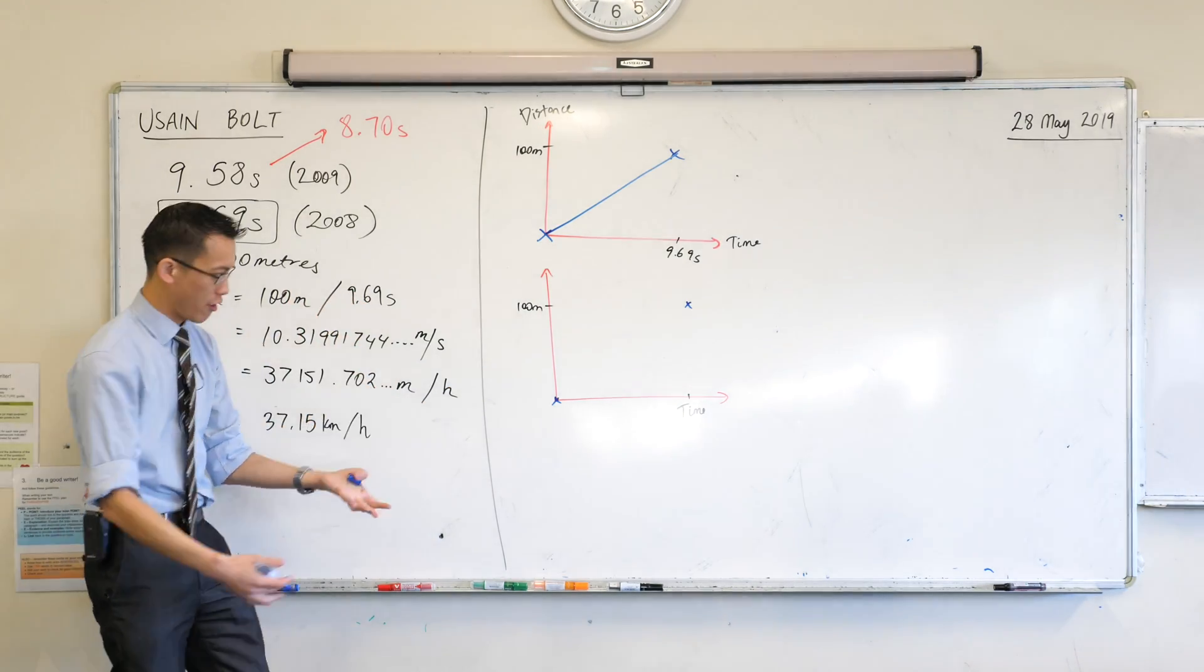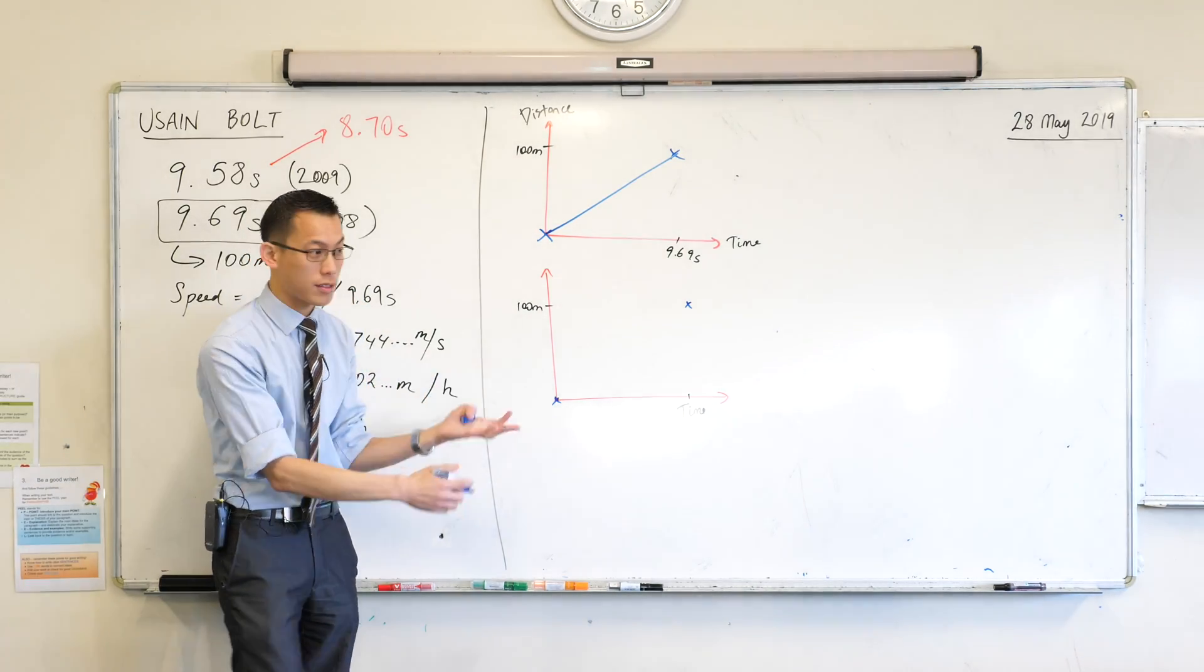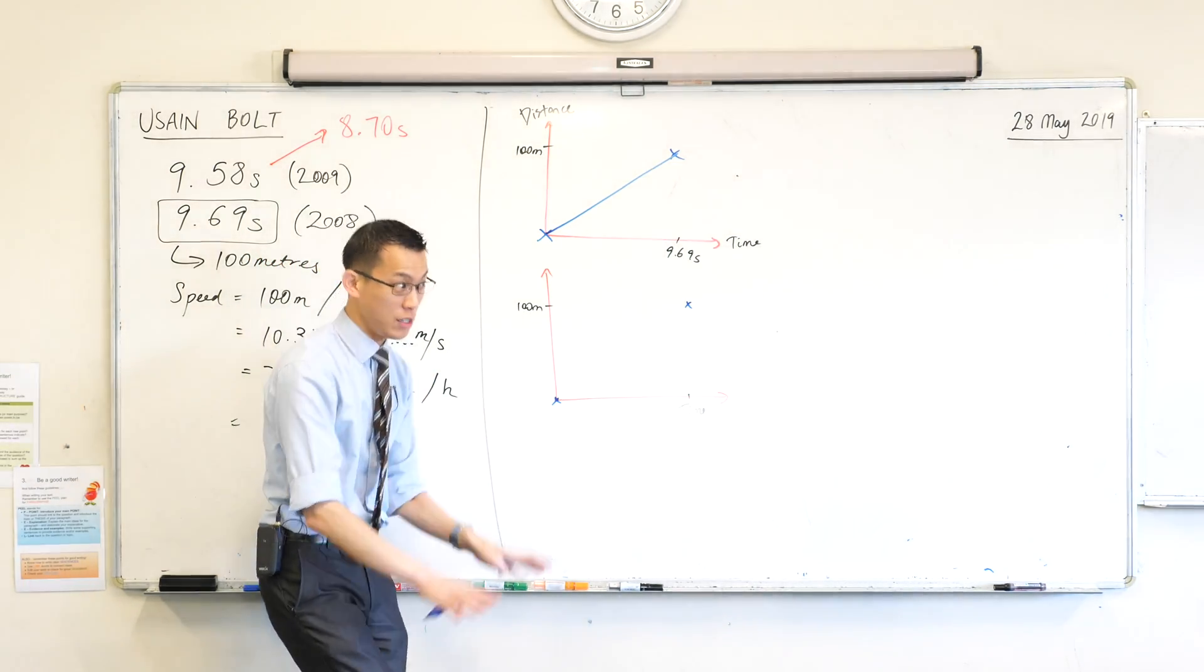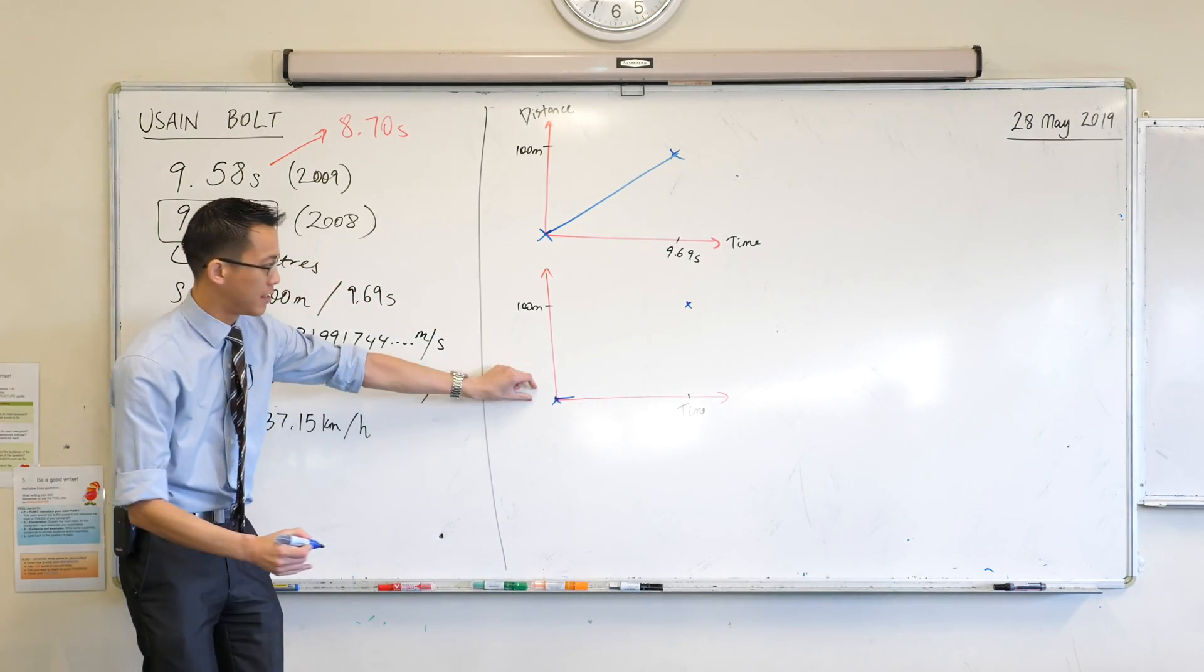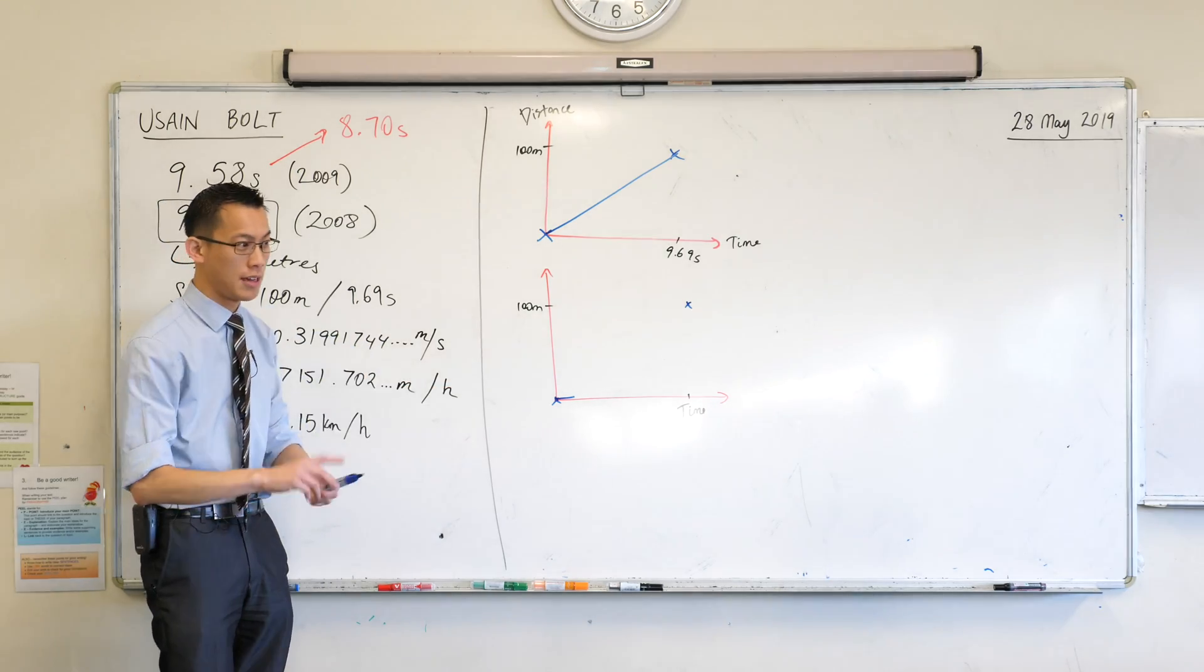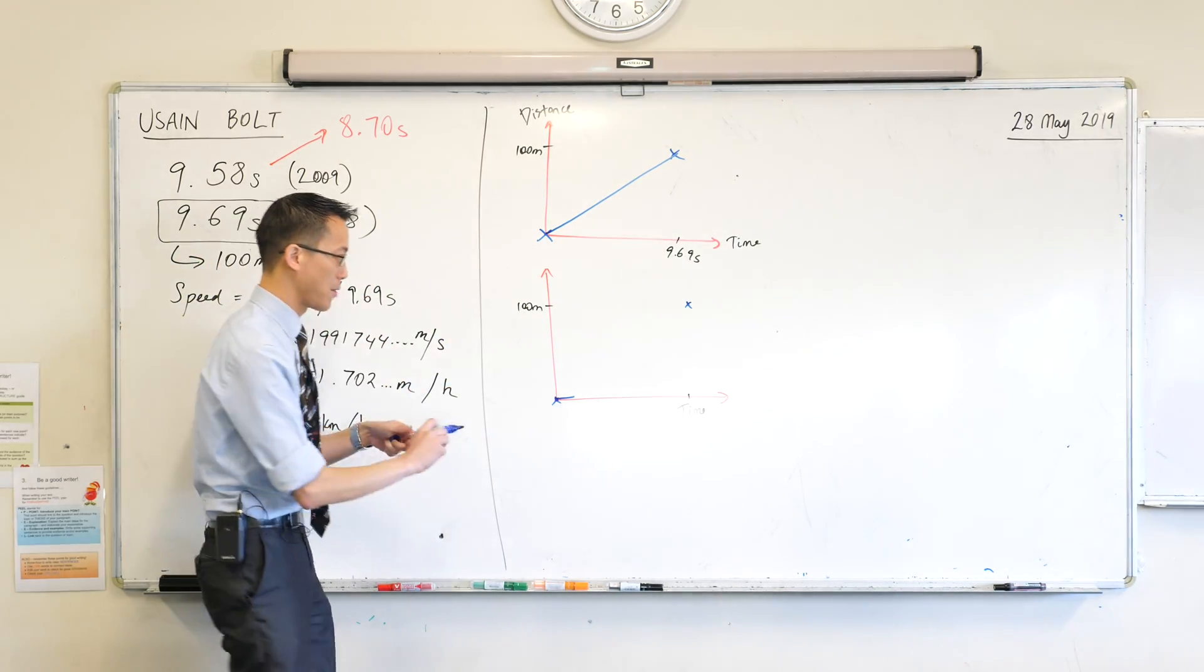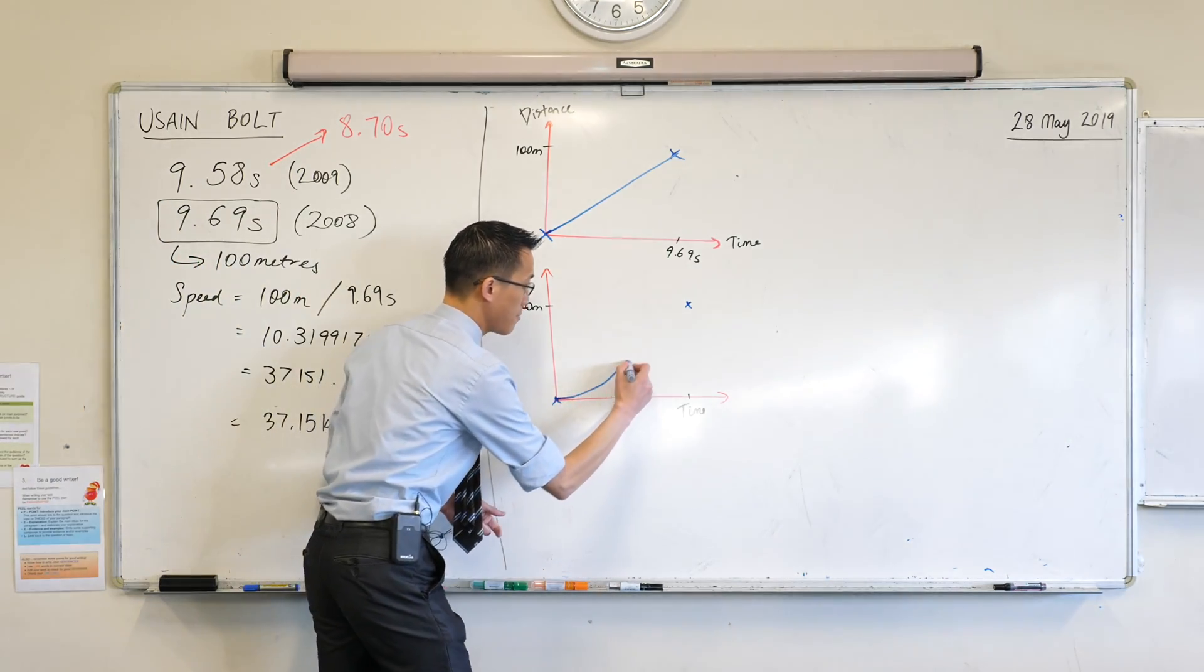But not just he starts off slow. Everyone starts at a speed of zero. No one's going anywhere. So they're kind of not going anywhere. Like the distance has not changed at all in that first instant after the gun goes off.